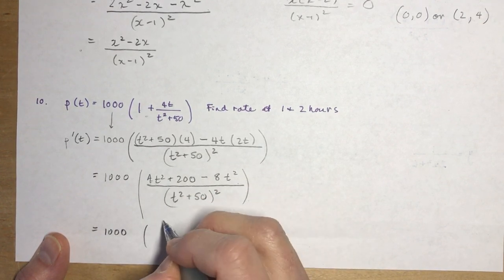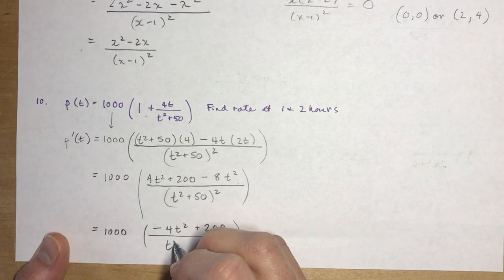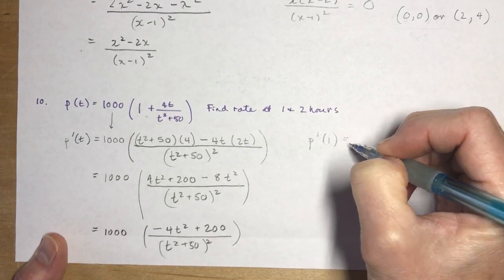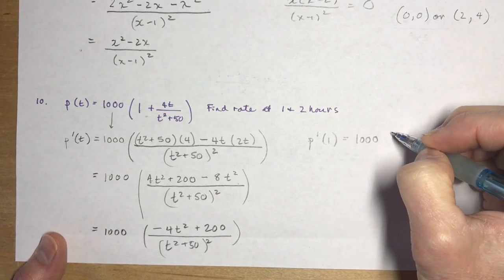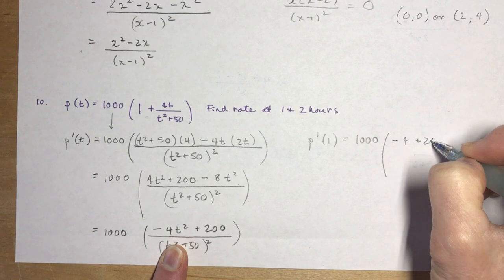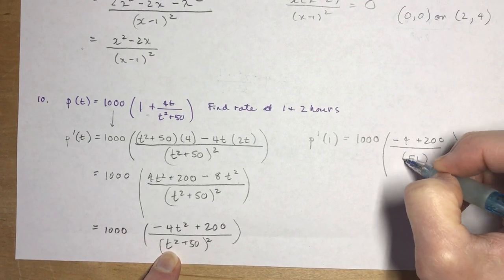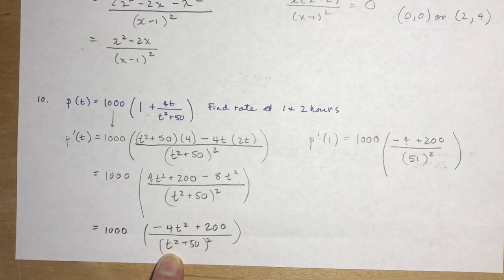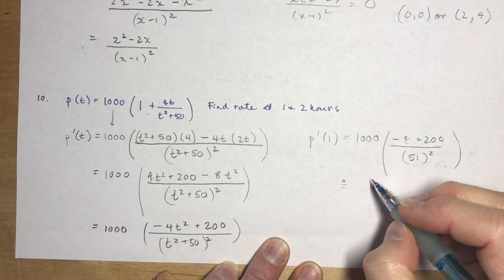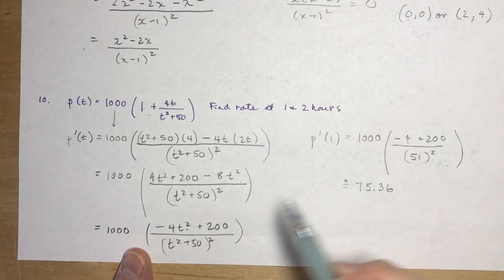Simplifying the numerator: 4t² + 200 - 8t², which is -4t² + 200 over (t² + 50)². I want to know what is P' at 1, so that's 1000 times, and I plug in 1 for my t. That gives me -4 + 200 divided by 51 squared. I don't want to do that, so I'm going to just tell you the answer - you can put it into your calculator, you get about 75.36. If you wanted to find P at 4, you just plug in 4 for t.